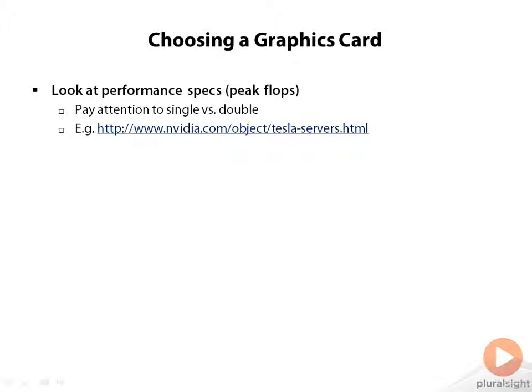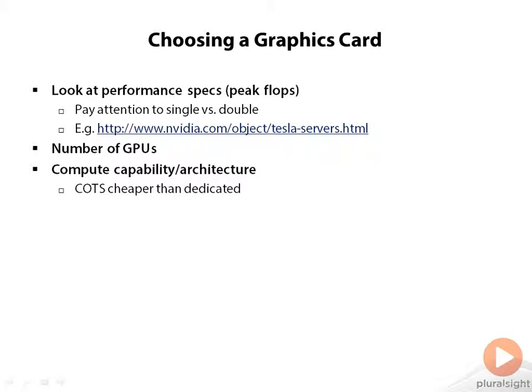To make comparisons easy, NVIDIA gives you tables listing various parameters on each card. So in addition to just the raw computational prowess of a card, you can also find out about the number of GPUs on the card, the compute capability or architecture of the card, the amount of memory available to each GPU, and so on — there are actually lots of parameters to look at.